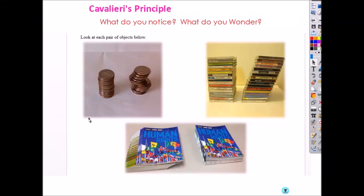What do you see in this first picture? A stack of quarters. So let's say we have the same amount of quarters. Would they have the same value? Would they have the same cross-section horizontally at the same height? Yes. Do they have the same height? Then they have the same value.